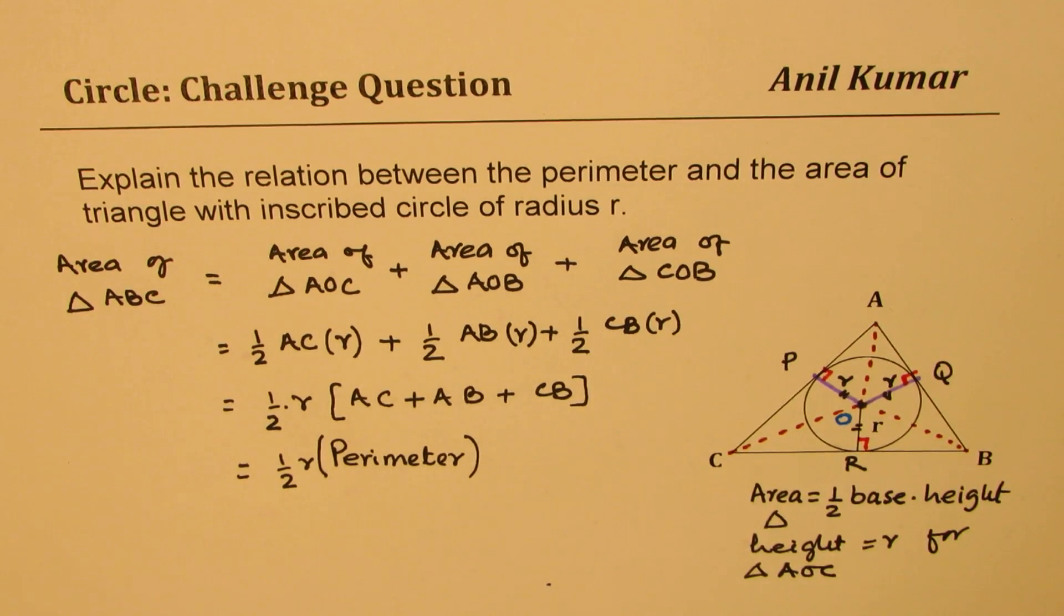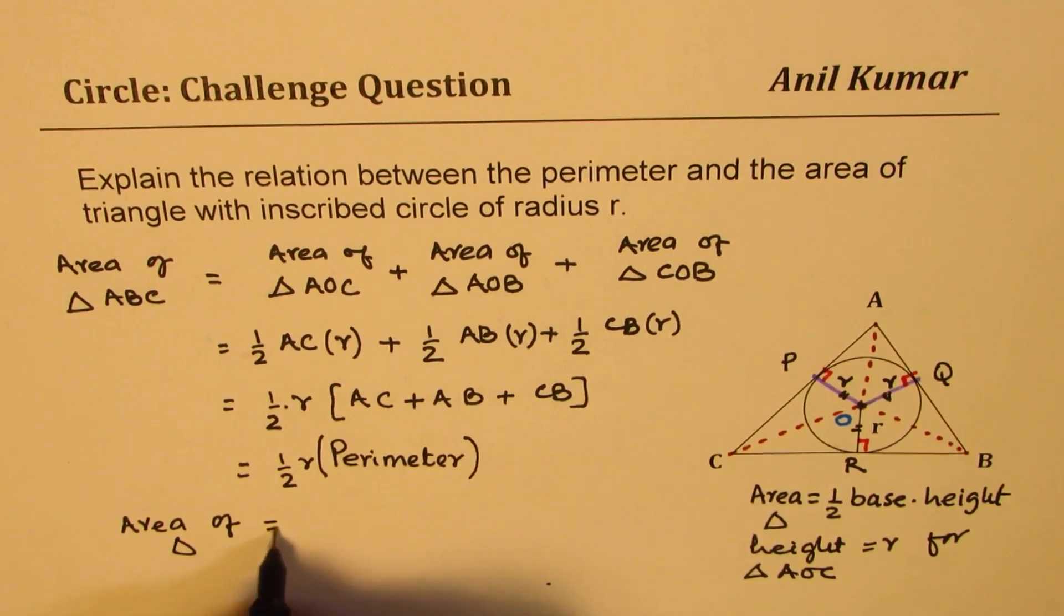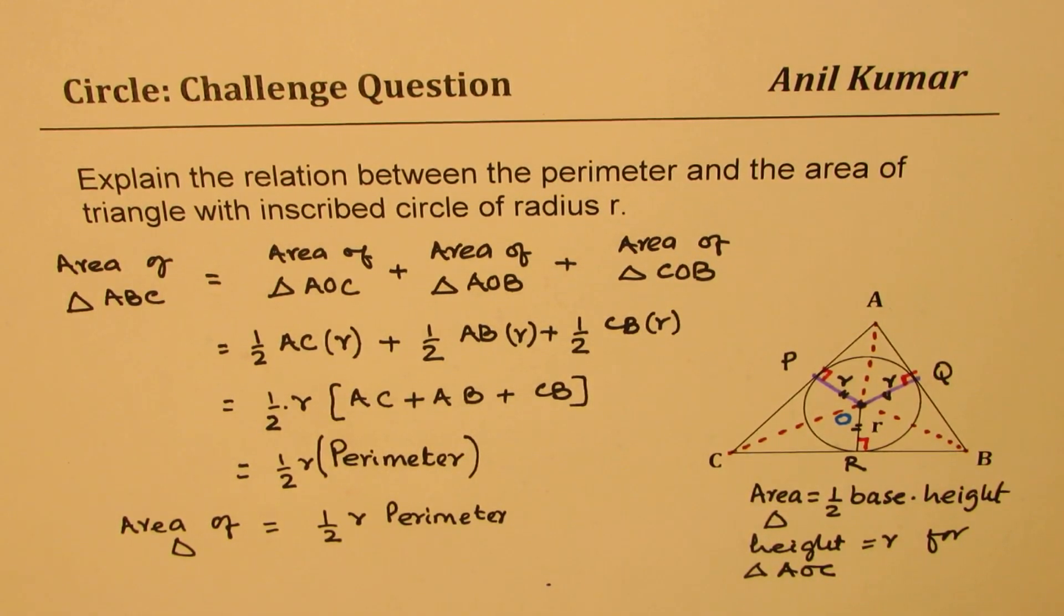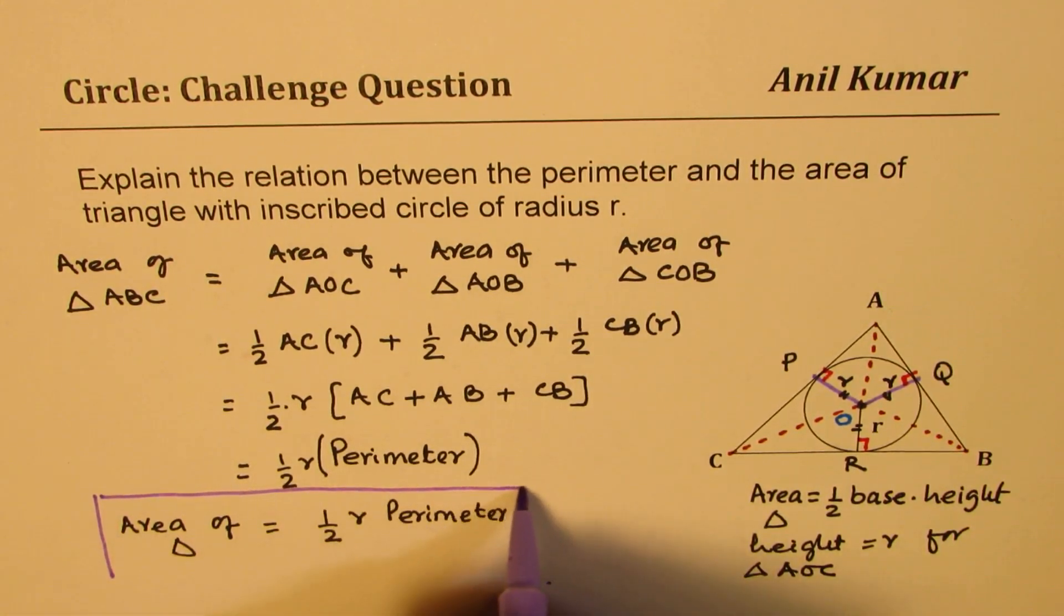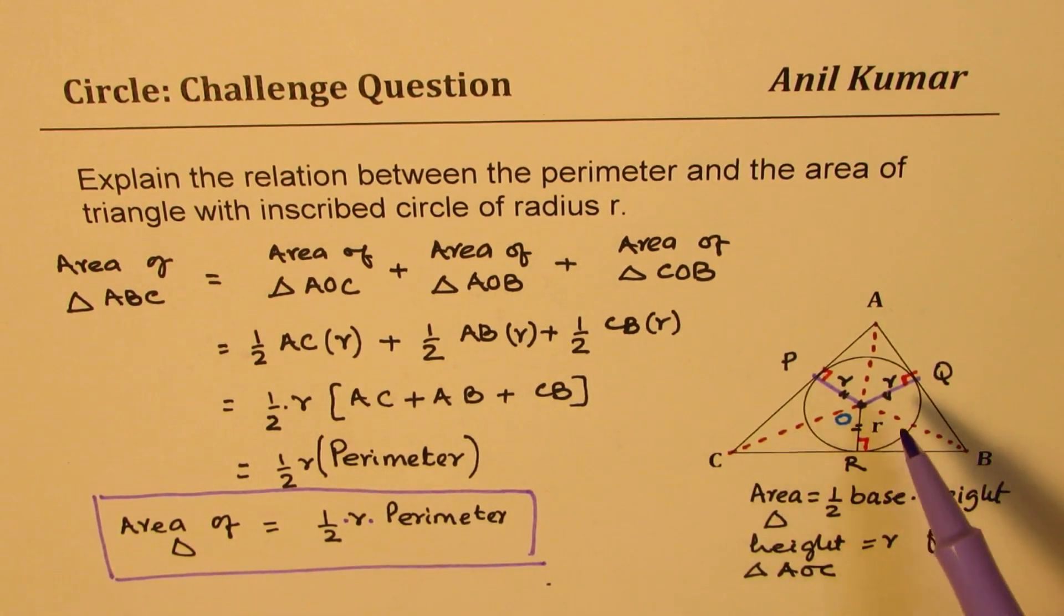Do you understand how we got this formula? So we can have a formula here, which is area of triangle is equal to half of radius times perimeter, or half perimeter times radius. So either way, better to write half perimeter times radius.